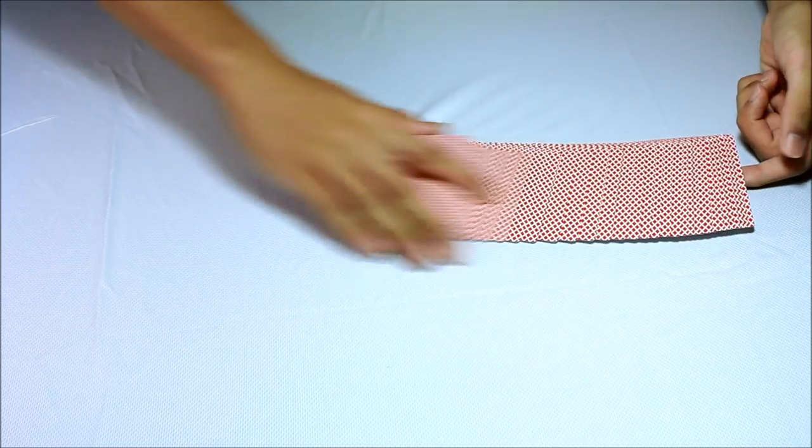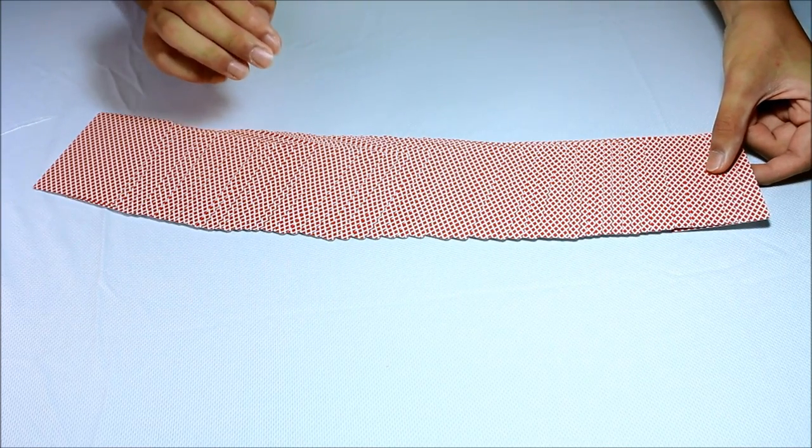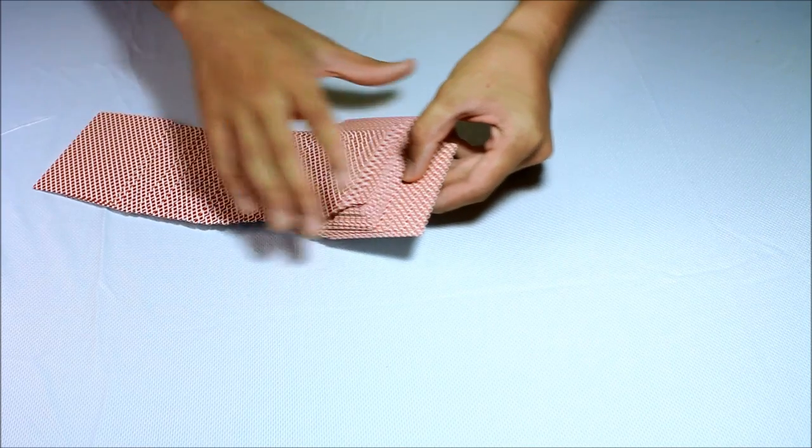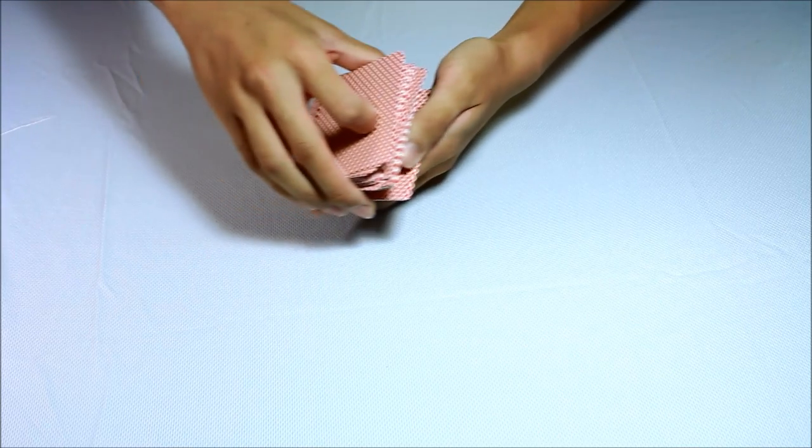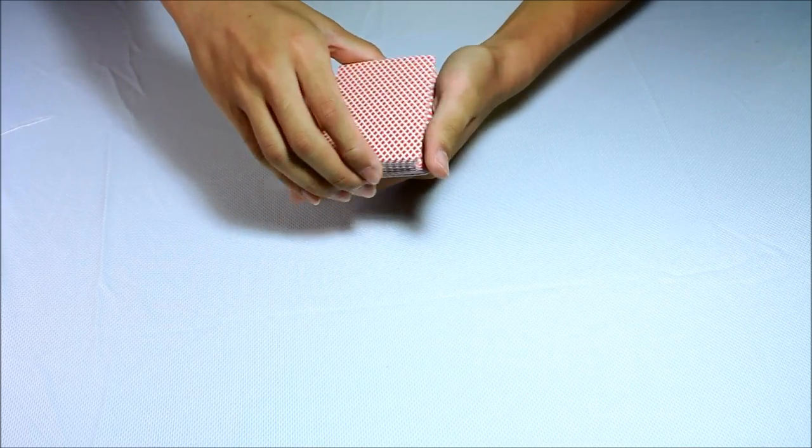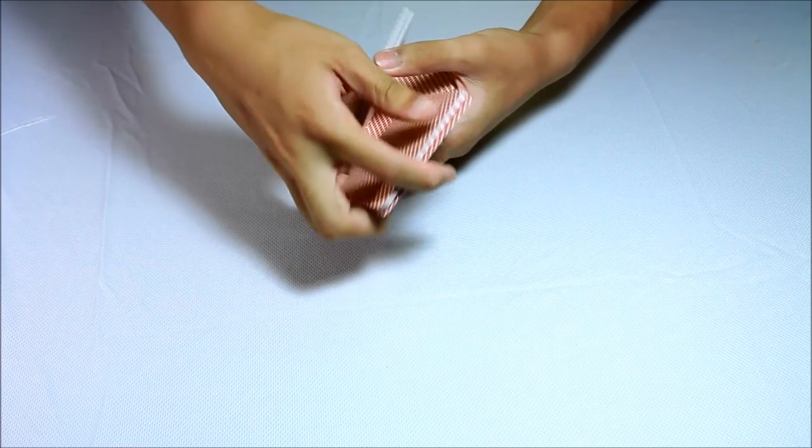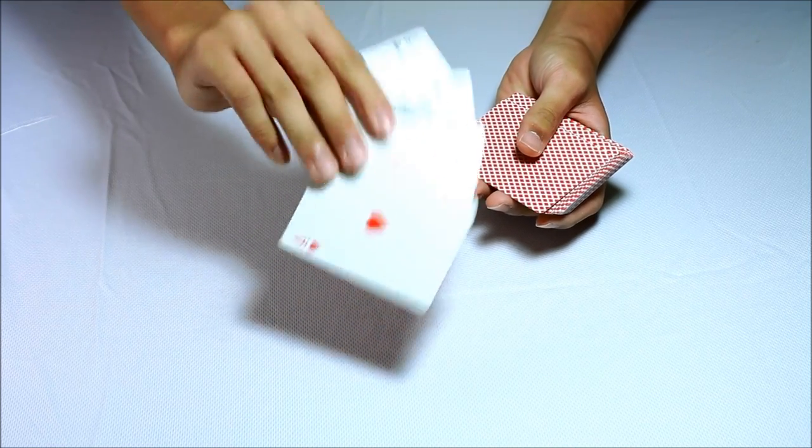Now as you spread out the pack, locate the bottom four cards with your thumb, which are here, and as you go to square the pack, obtain a break in the pack with your thumb. Now give the pack a few cuts and control the pack of four aces to the top.